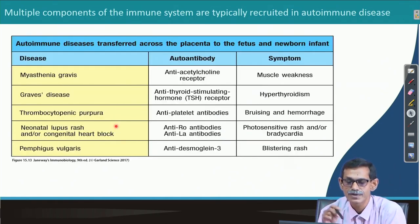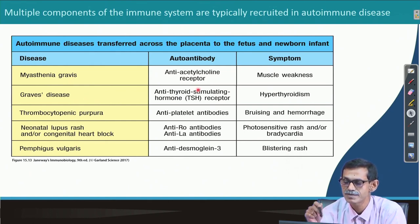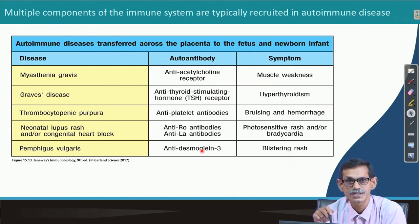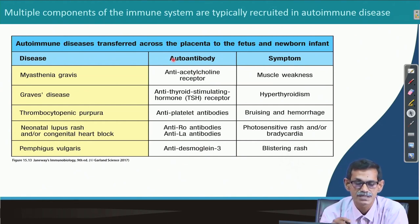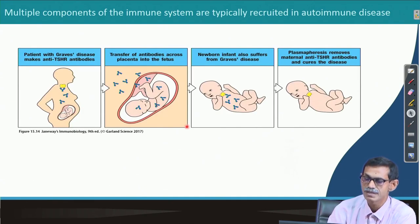There is a table listing diseases with their autoantigens and consequences. In myasthenia gravis, autoantibody is generated against the acetylcholine receptor. In Graves disease, lupus, and many others, antibodies are also responsible for the disease.